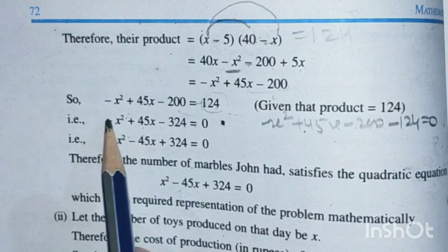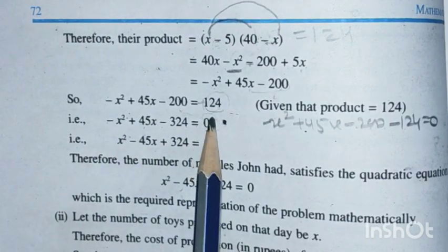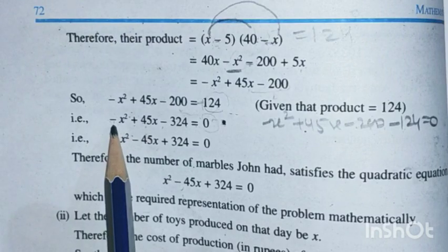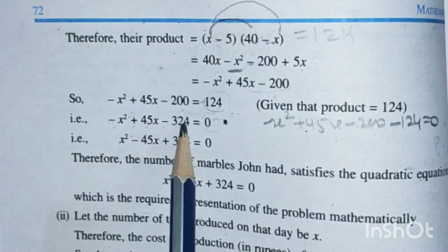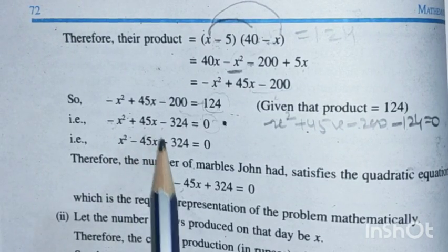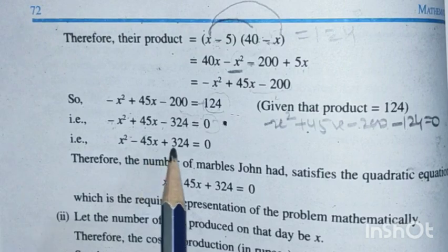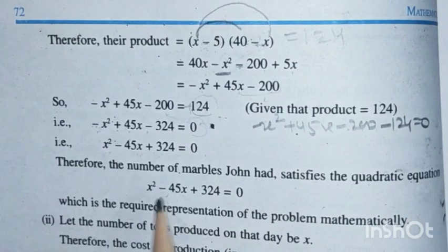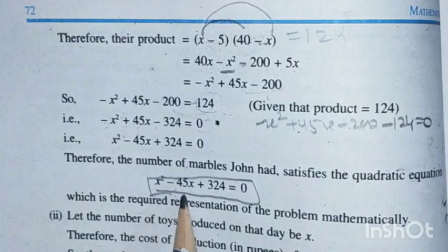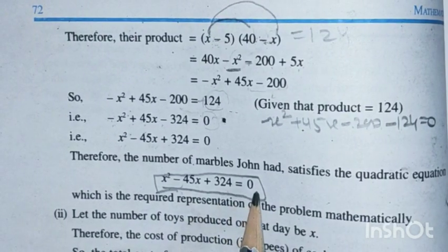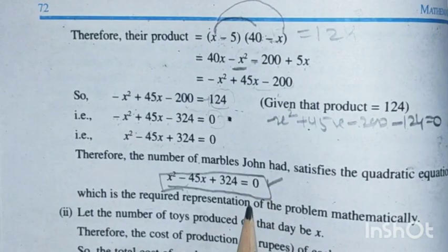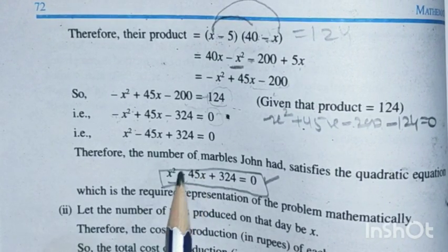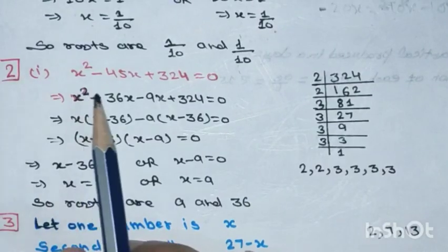Multiplying through by -1 changes the signs: minus becomes plus and plus becomes minus. So we get x² - 45x + 324 = 0. Therefore, the number of marbles John had satisfies the quadratic equation x² - 45x + 324 = 0. Now we need to solve this further to find x — how many marbles John and Jayvanti each had.